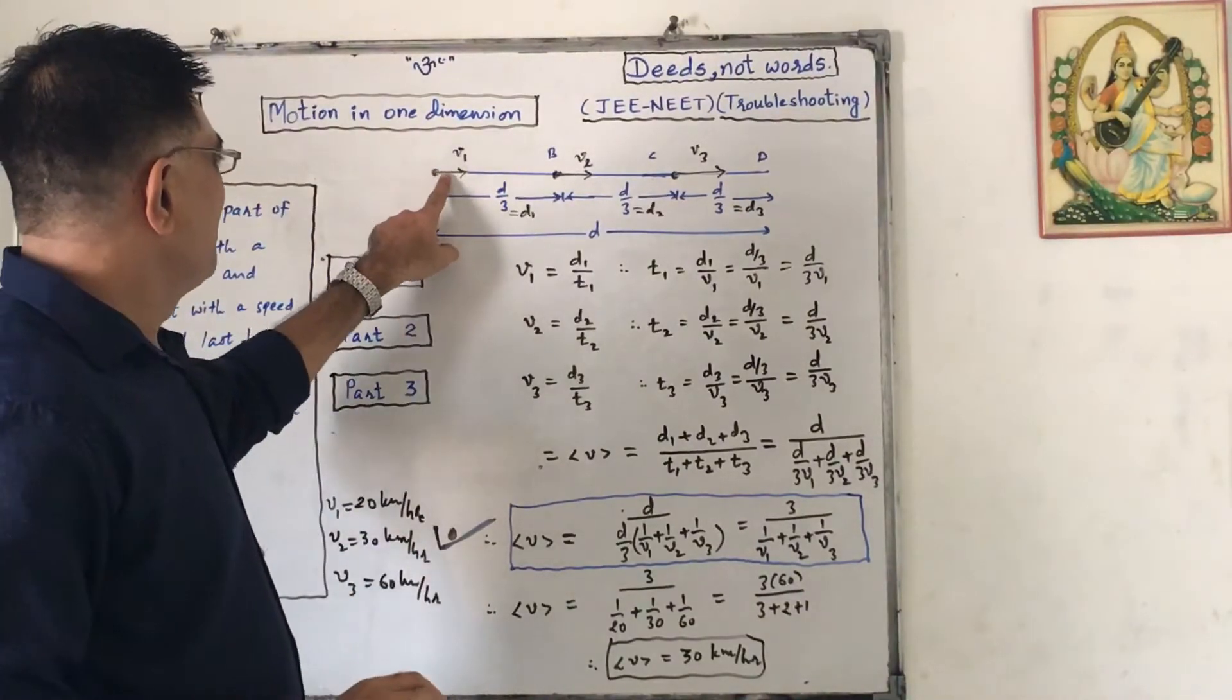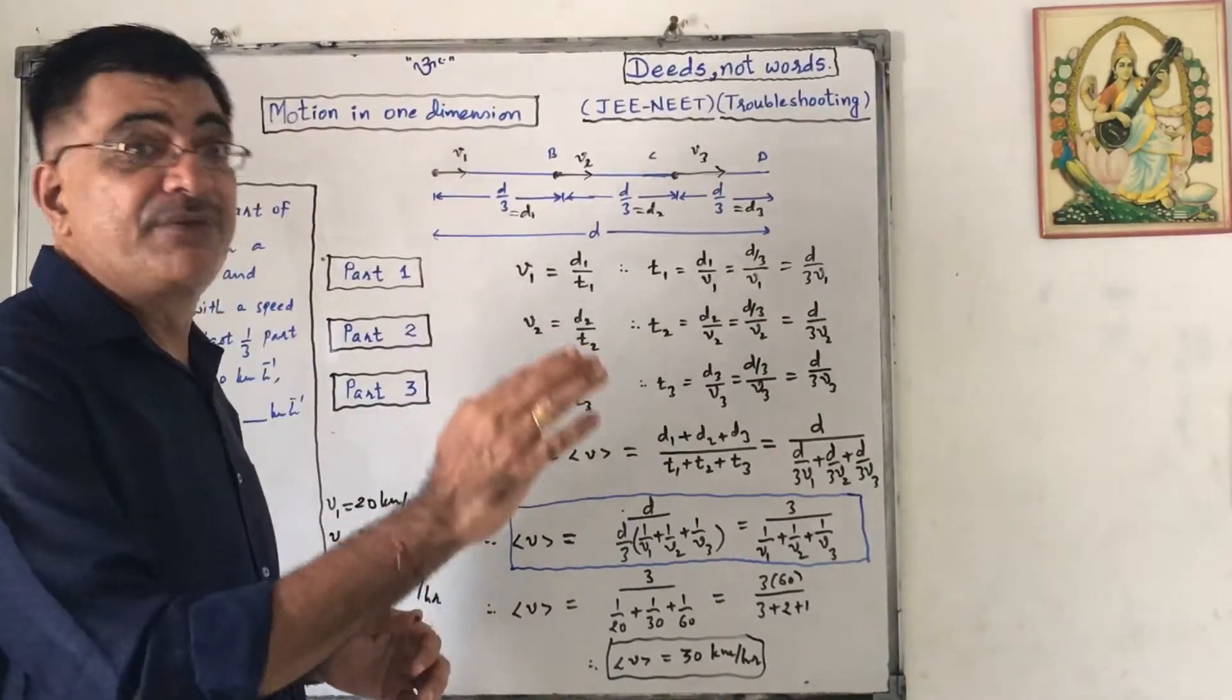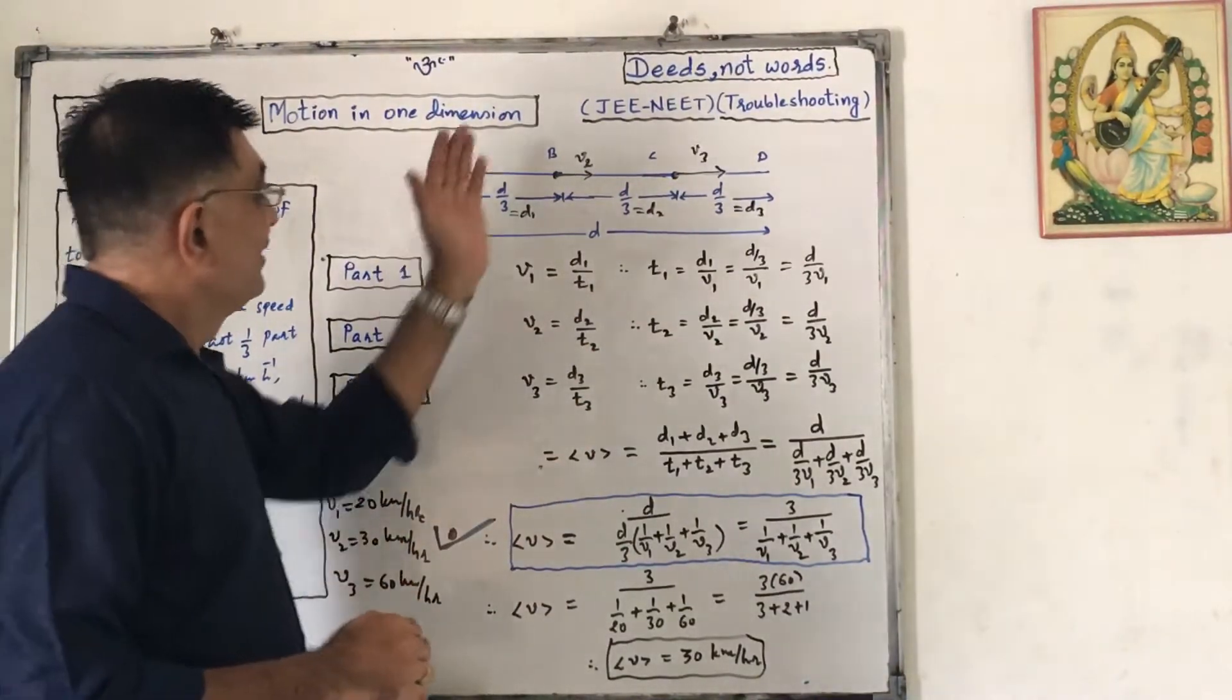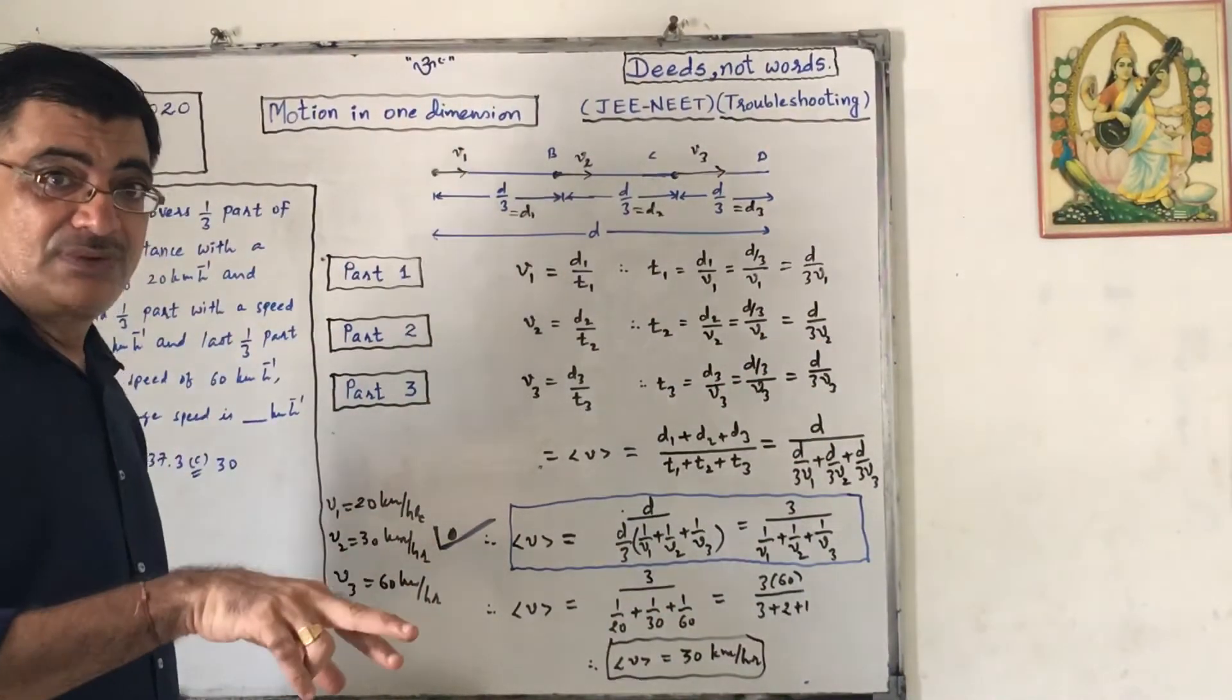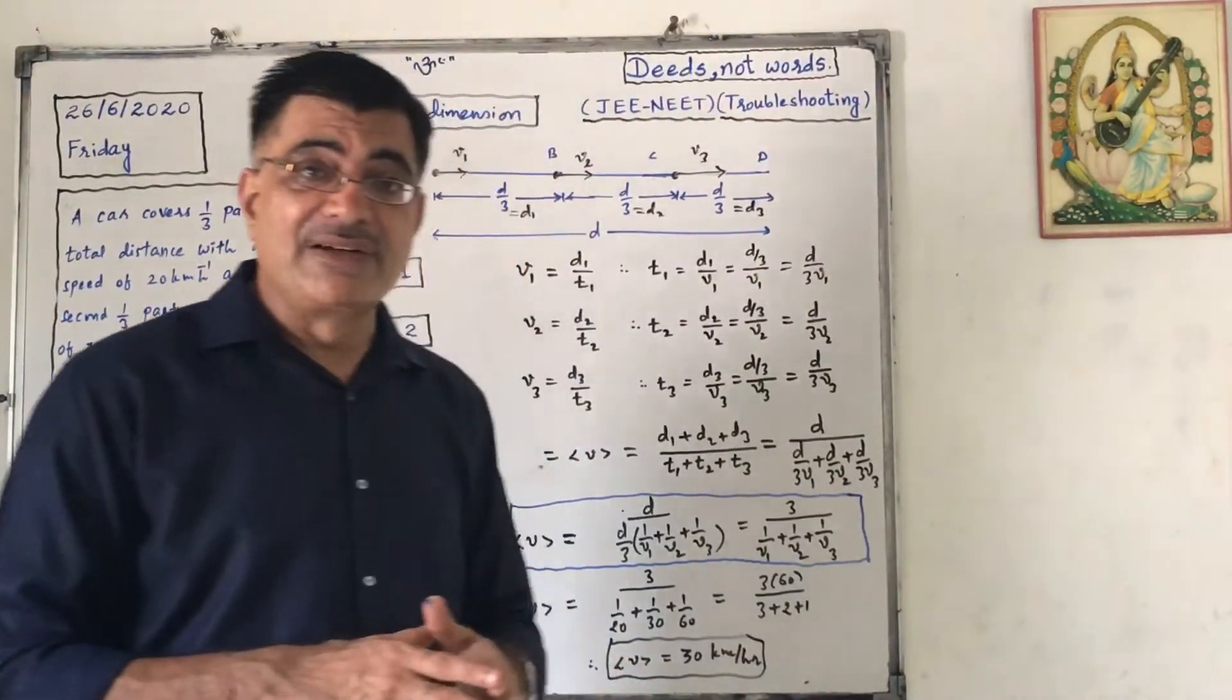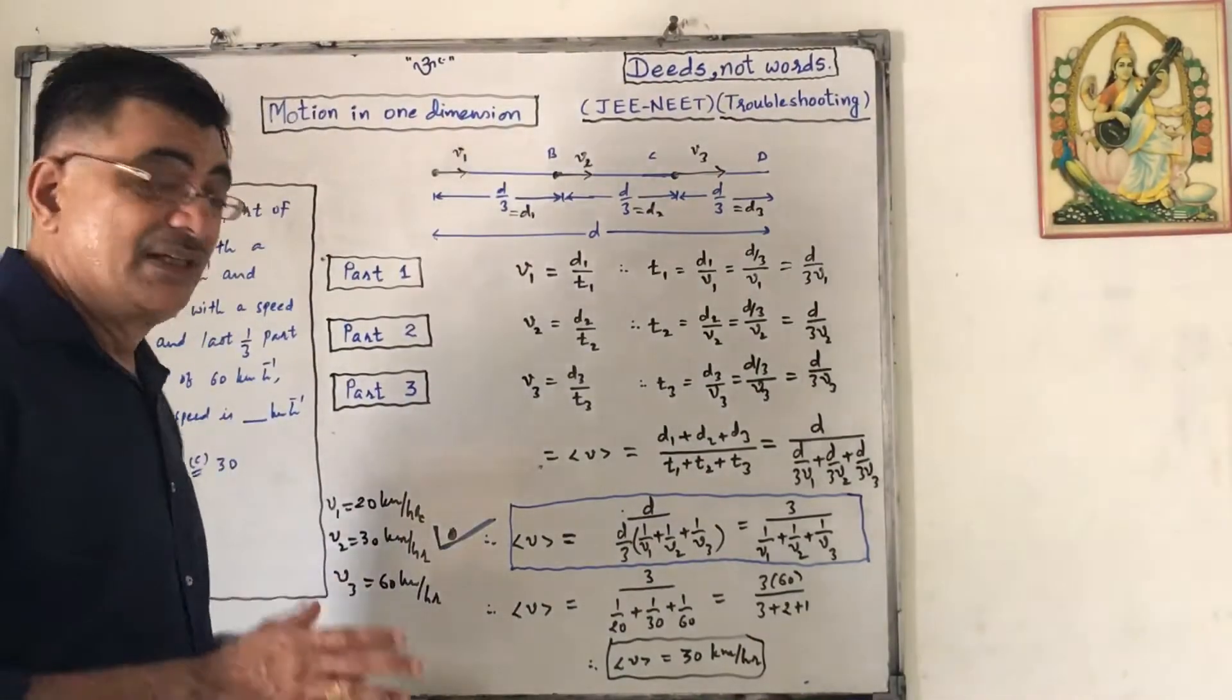Here, speed is V1. That means this distance it will travel with a constant speed V1, where V1 is 20 km per hour. This second part it will travel with a constant speed V2, that is 30 km per hour. And this third part also it will travel with a constant speed V3, that is 60 km per hour.